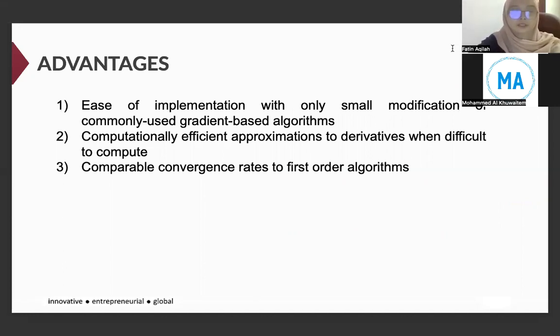I will explain the advantages of zero-order optimization. There are three main advantages in zero-order optimization. The first one is ease of implementation with only small modification of commonly used gradient-based algorithms. The second one is computationally efficient approximations to derivatives when it is difficult to compute. And the last one is comparable convergence rates to first-order algorithms.